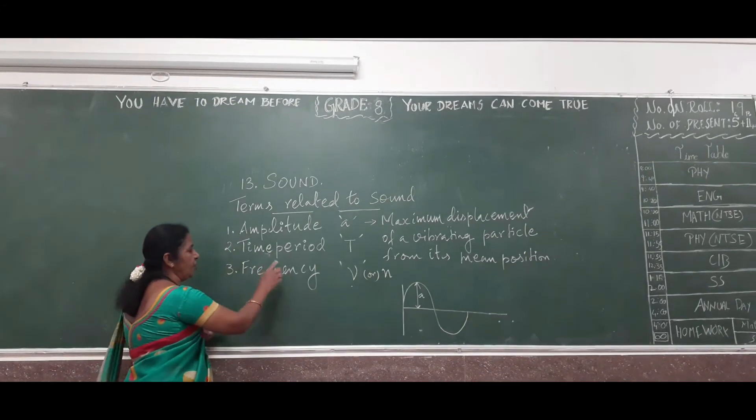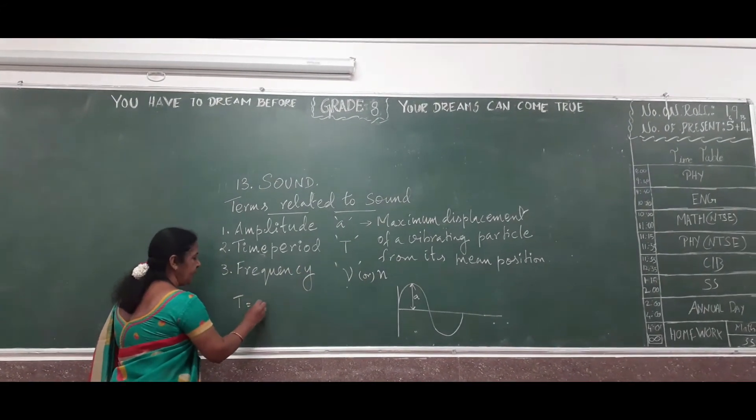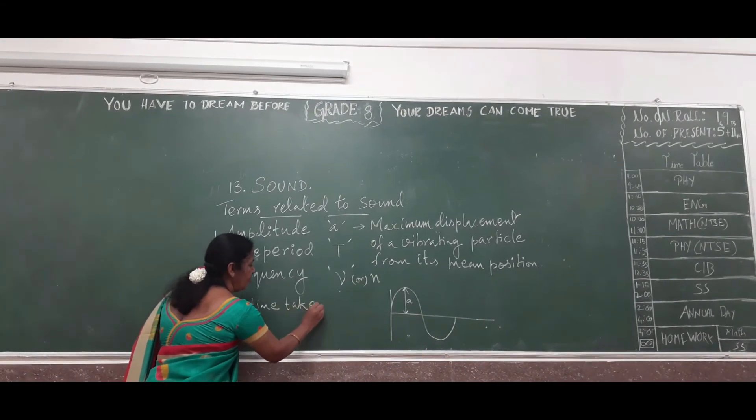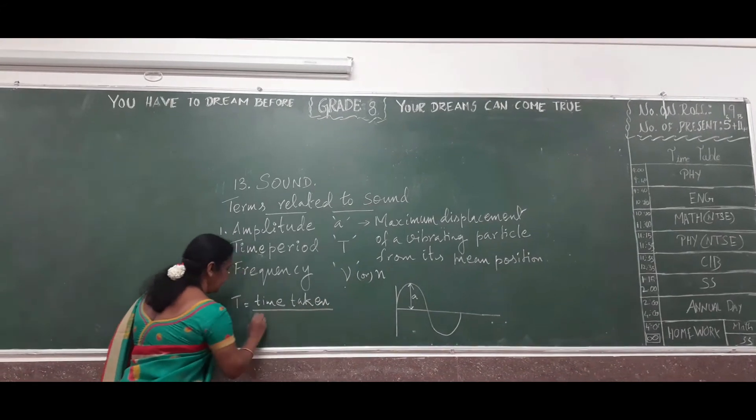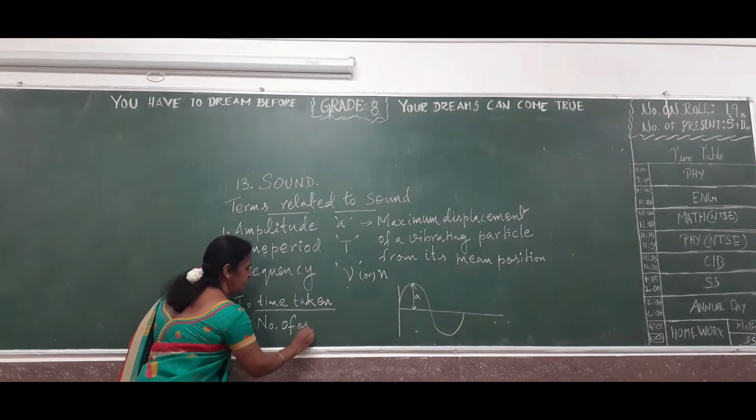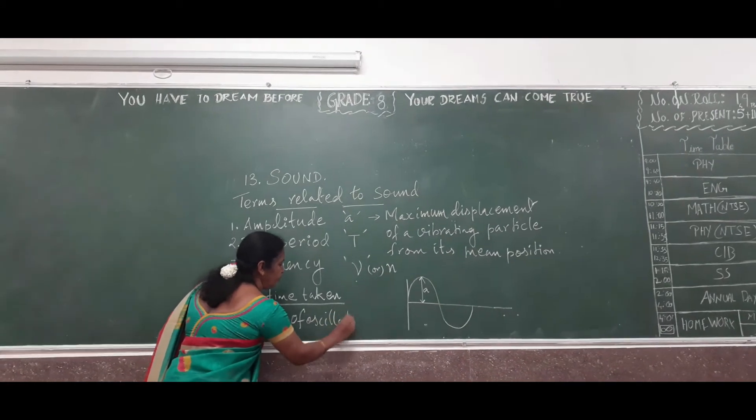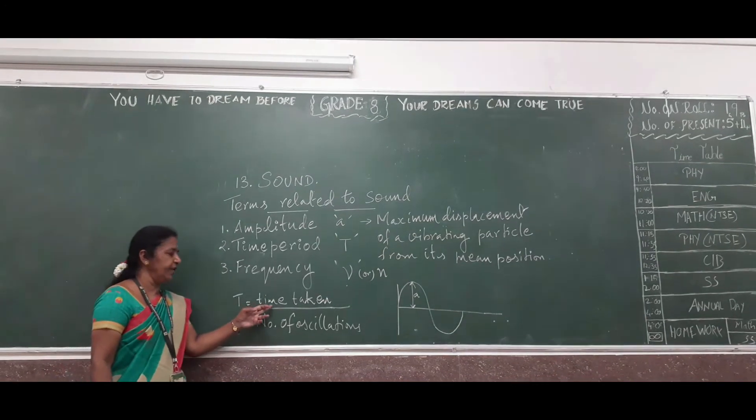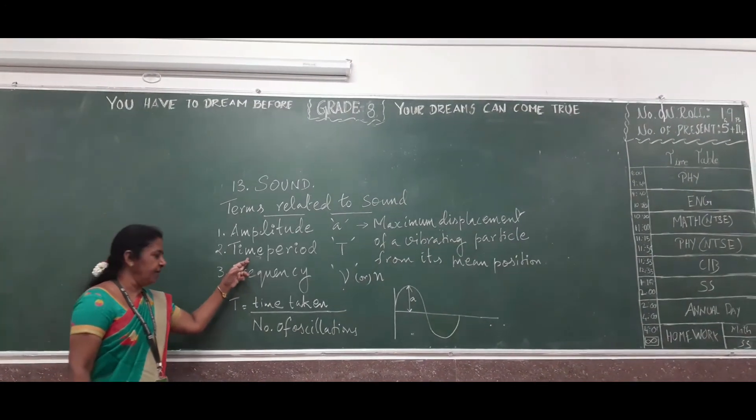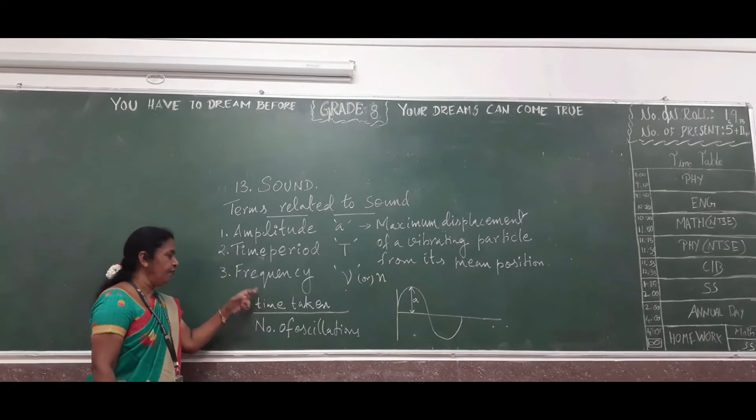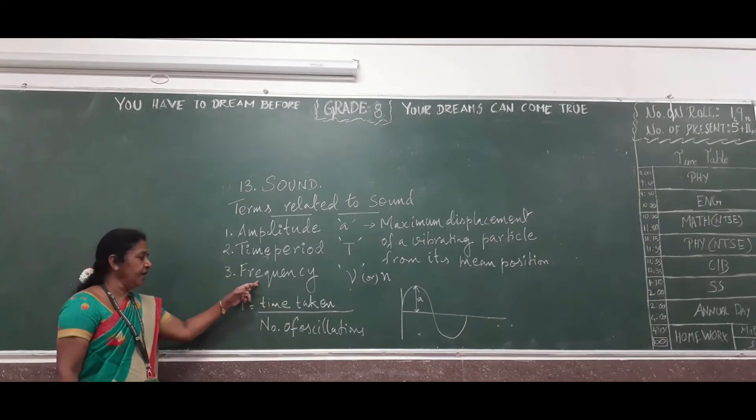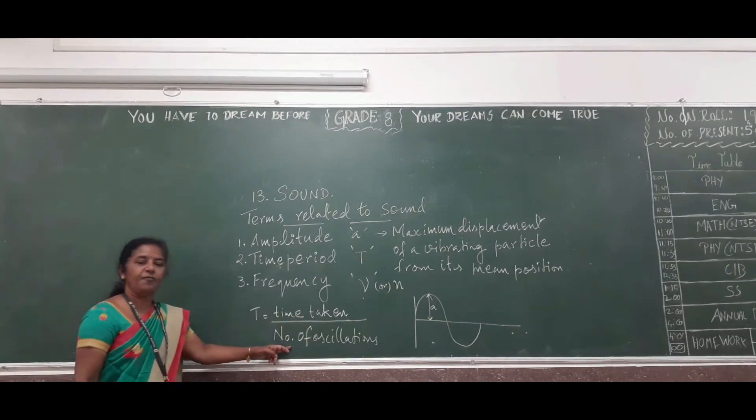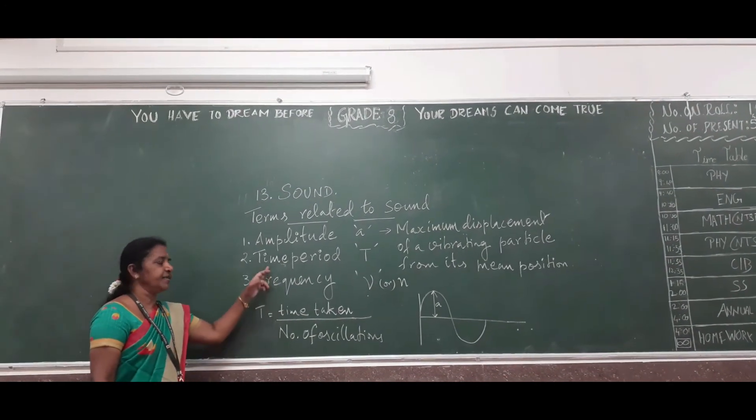So time period. We can write that formula: T is equal to time taken by number of oscillations. When we are going to do the problems, you can be able to understand how we are supposed to do it. Time period is defined as reciprocal of frequency, or time taken to complete the number of oscillations.